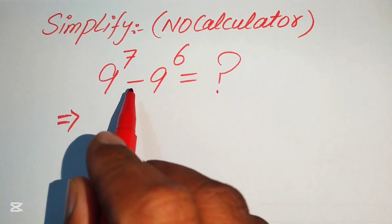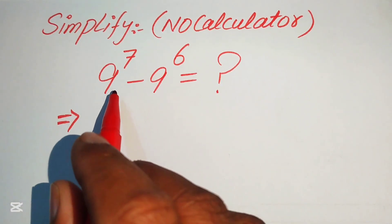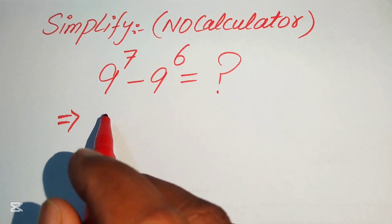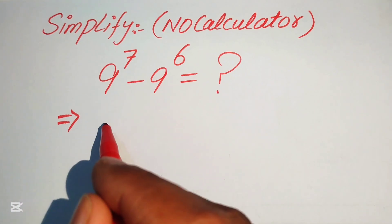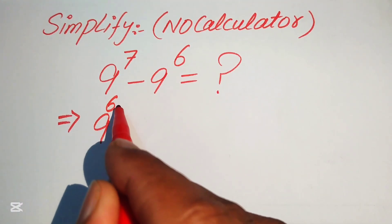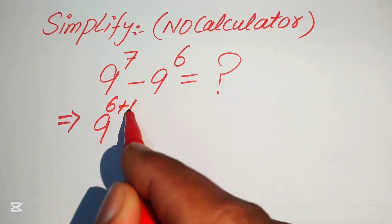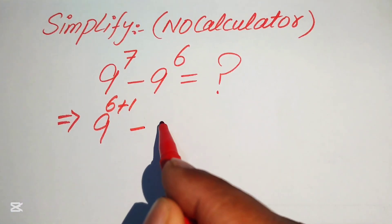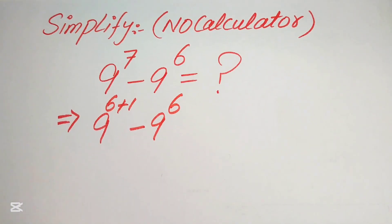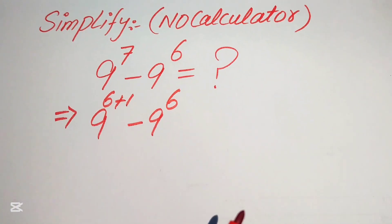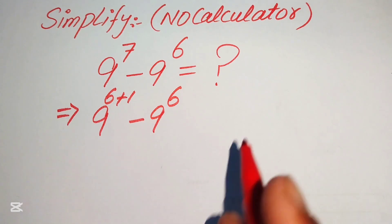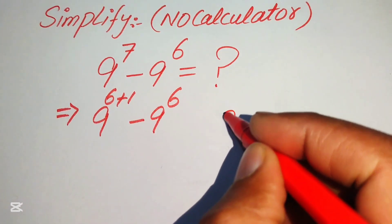The very first step: we focus on the left-hand side. We have 9 to the power of 7, and we rewrite it as 9 to the power of 6 plus 1, minus 9 to the power of 6.